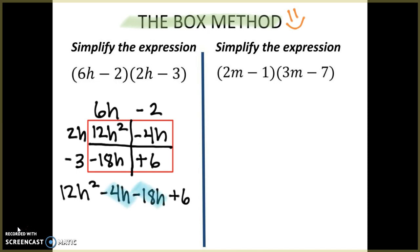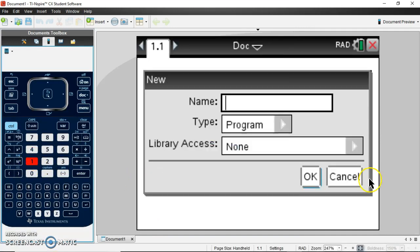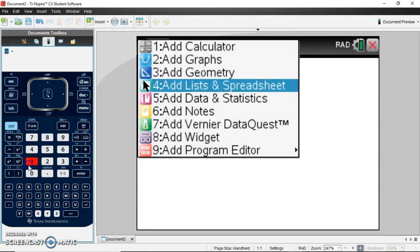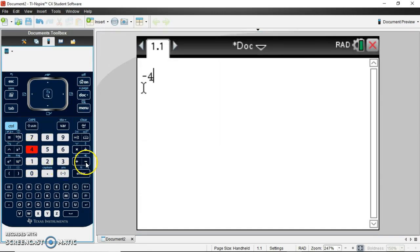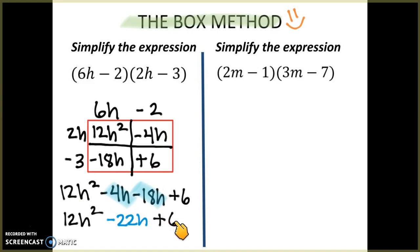Once my box is filled out, I write each term down to combine like terms: 12h squared minus 4h minus 18h plus 6. The like terms are the middle terms — negative 4 minus 18 equals negative 22 — so that gives negative 22h. I bring down my 12h squared and my positive 6. Now I want you to try the next one: construct the box and find the product as your final answer.